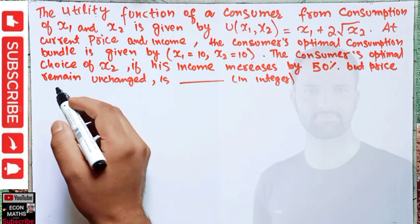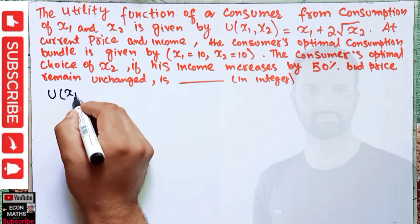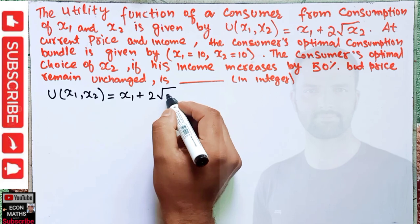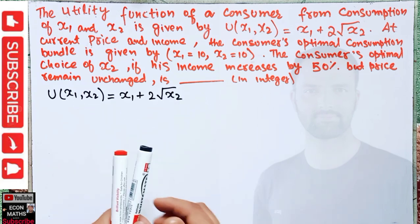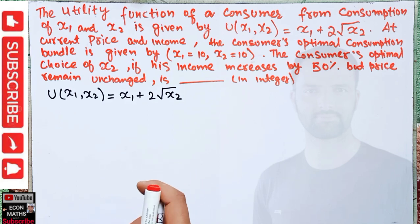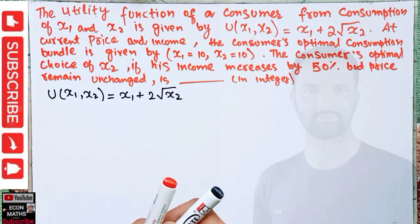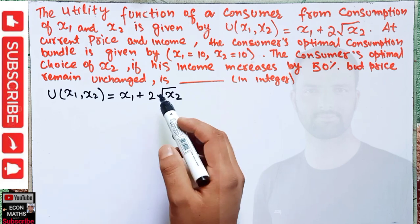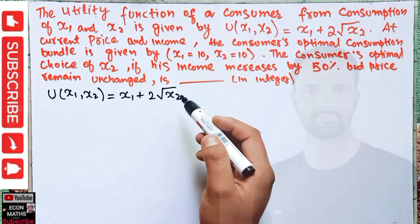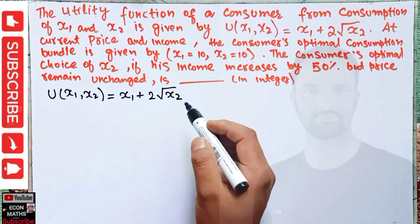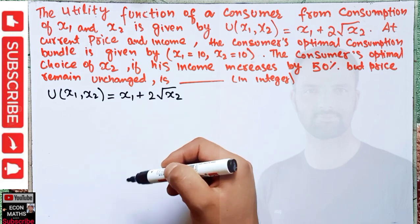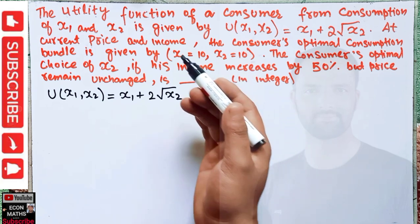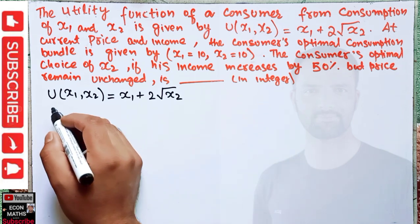The utility function u(x1, x2) = x1 + 2√x2 is a quasi-linear utility function. Quasi-linear preferences are those where to achieve maximum satisfaction, the consumer buys only up to a certain amount of one of the two goods. Up to a certain critical point, the consumer will consume only one good, and after that critical point is reached, he will not consume any more of that good — all additional consumption goes to x1.